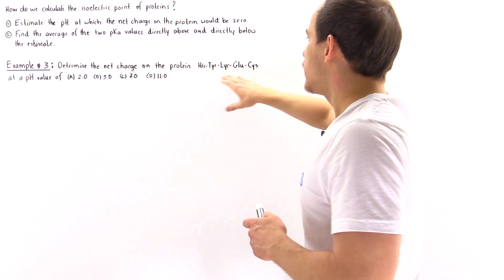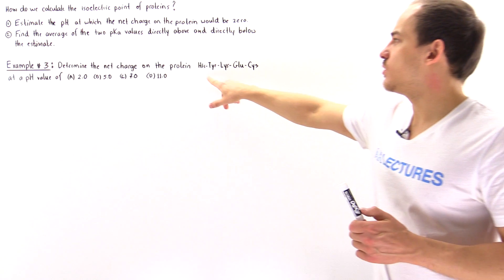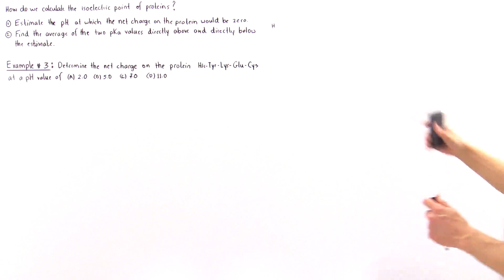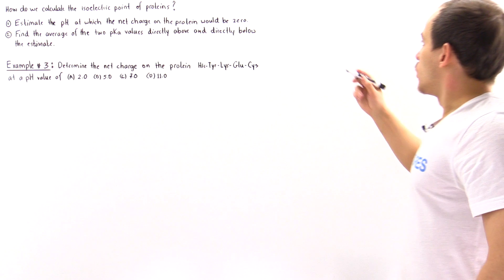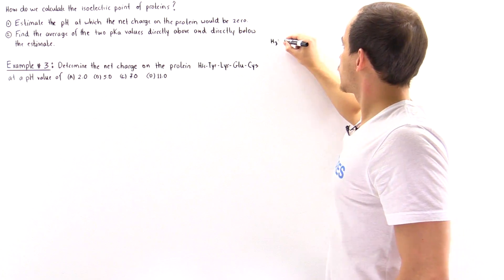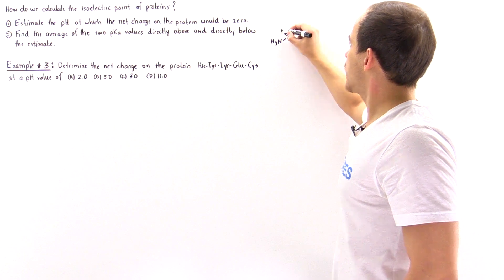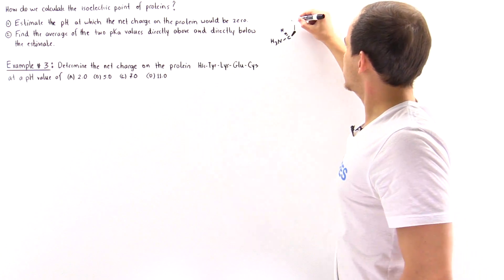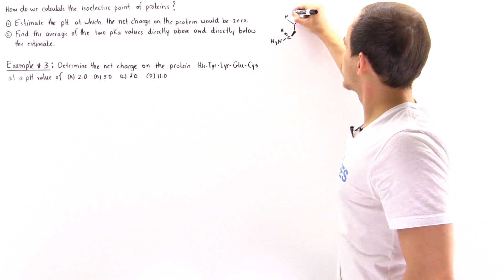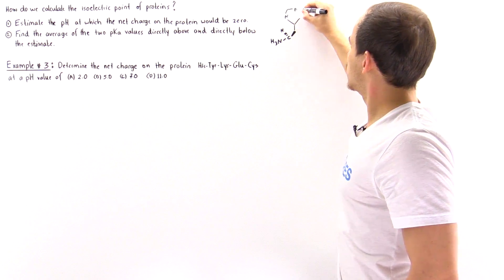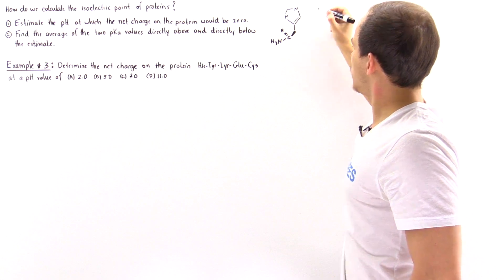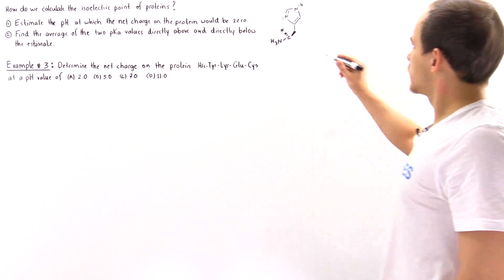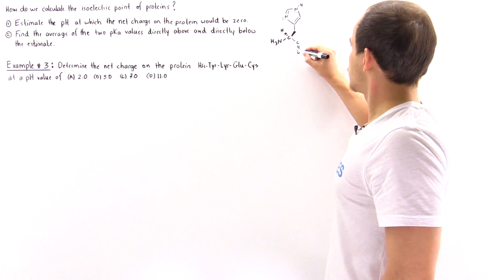Let's begin by drawing the structure of this protein, starting with histidine. We have H3N and our central carbon atom, with H going into the board. The side chain group for histidine looks like this — we have a double bond here, a double bond here, an H here. Let's finish off the first amino acid with this carbonyl group.